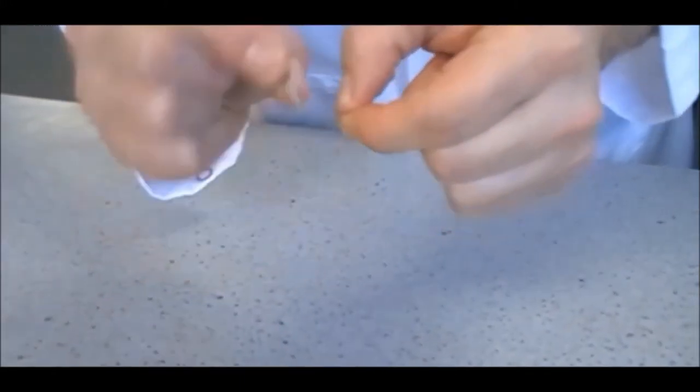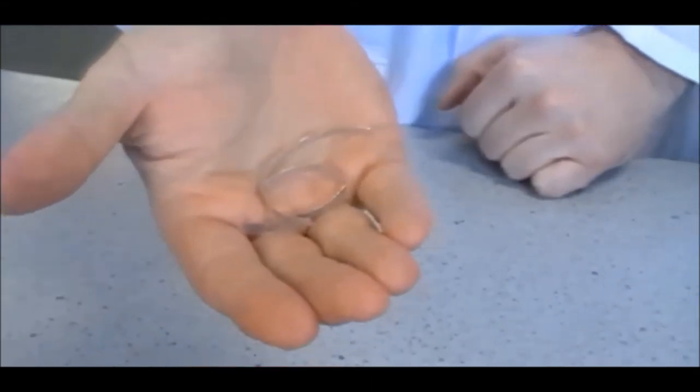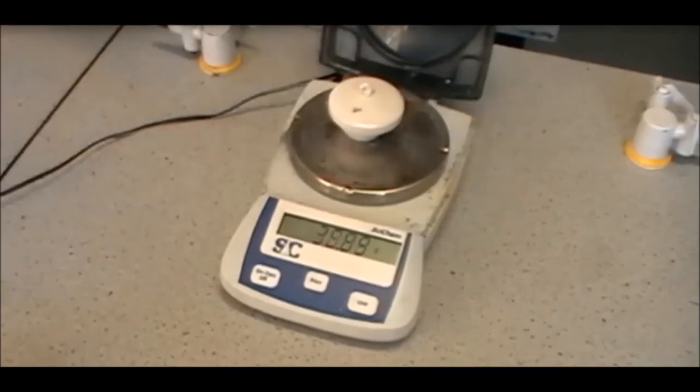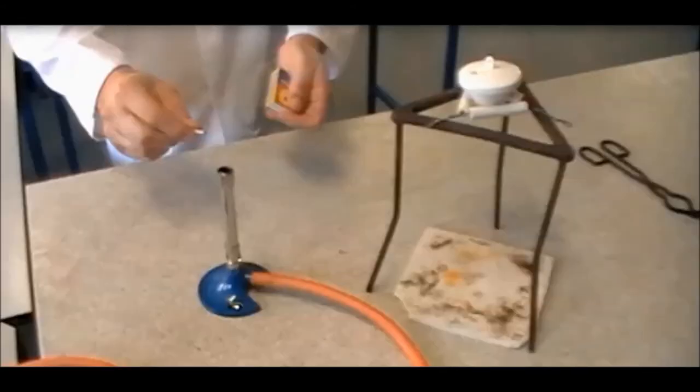So you can see here, we've got magnesium, and it's a shiny metal, and you can bend it, so it's malleable. Now, let's measure the mass of the crucible with its lid and the unburnt magnesium. And we can see that it comes to 36.83 grams.